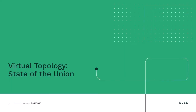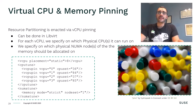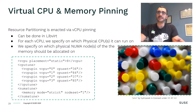So this is how, in my experience at least, the topic of whether or not a VM should have a virtual topology is typically dealt with. Basically, we use and recommend giving a VM a virtual topology if and only if we have dedicated resource partitioning. Dedicated resource partitioning is implemented by means of VCPU pinning and also memory pinning, both of which can be configured from libvirt as shown in this slide.